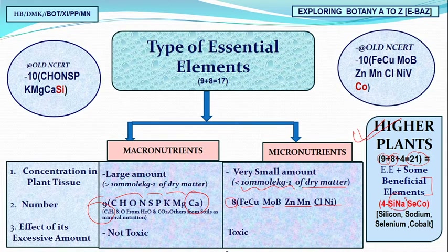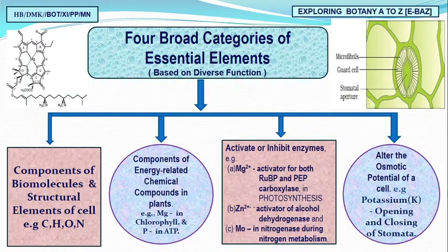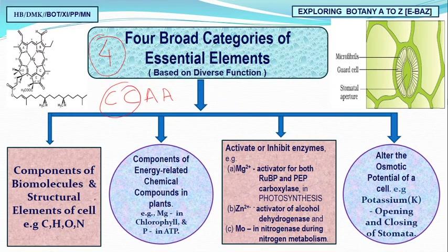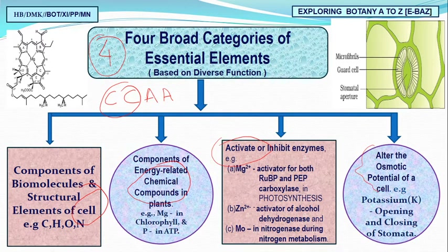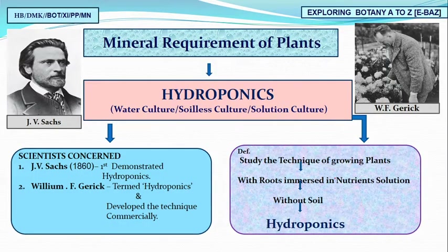The four beneficial elements are remembered by the mnemonic CNaSeCo — Silicon (Si), Sodium (Na), Selenium (Se), and Cobalt (Co). We studied four broad categories (CCAA) for essential elements: components of cell biomolecules, components of energy-related compounds, activators or inhibitors of enzymes, and elements that alter osmotic concentration — such as potassium, which controls stomatal opening and closing in guard cells.